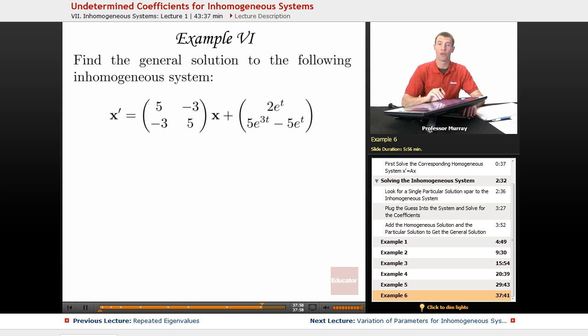So I'm not going to redo all the work, I'm just going to quote the answers that we figured out in our previous examples. In example 3, we solved the homogeneous system, which means we completely ignored all the inhomogeneous terms, all those e to the t terms, and we got x homogeneous was c1 times [1,1] times e to the 2t plus c2 times negative [1,1] times e to the 8t. You can go back and watch example 3 to see where that came from.